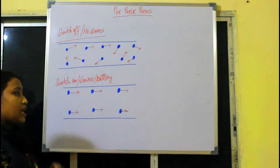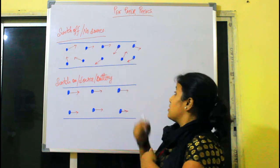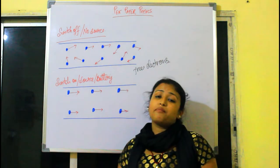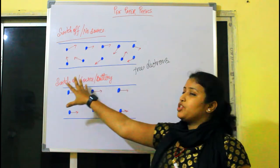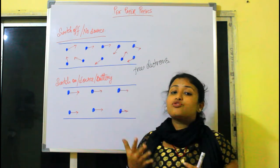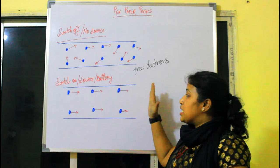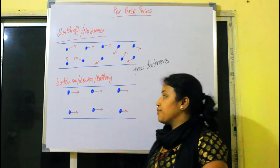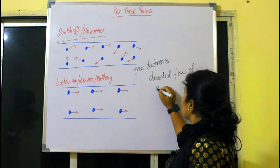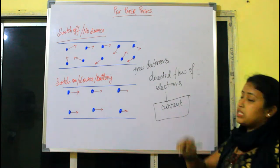Last time we ended with the situation that, generally, without any source attached or when the switch is off, the free electrons — represented by these dots — are randomly moving in all possible directions inside the conductor. Now when you switch on the circuit or attach a battery or cell, you give the electrons a cause to flow in a particular direction, and the electrons start moving in a fixed direction. This directed flow of electrons is called current.